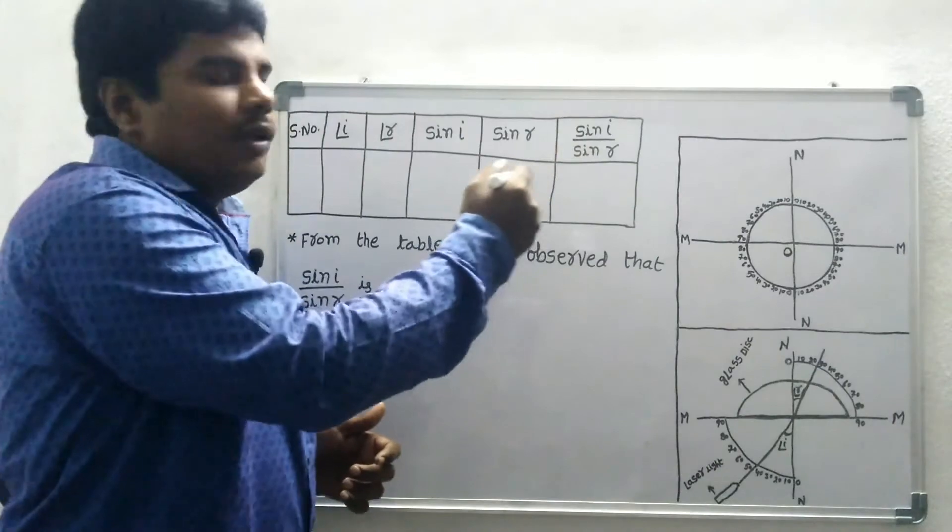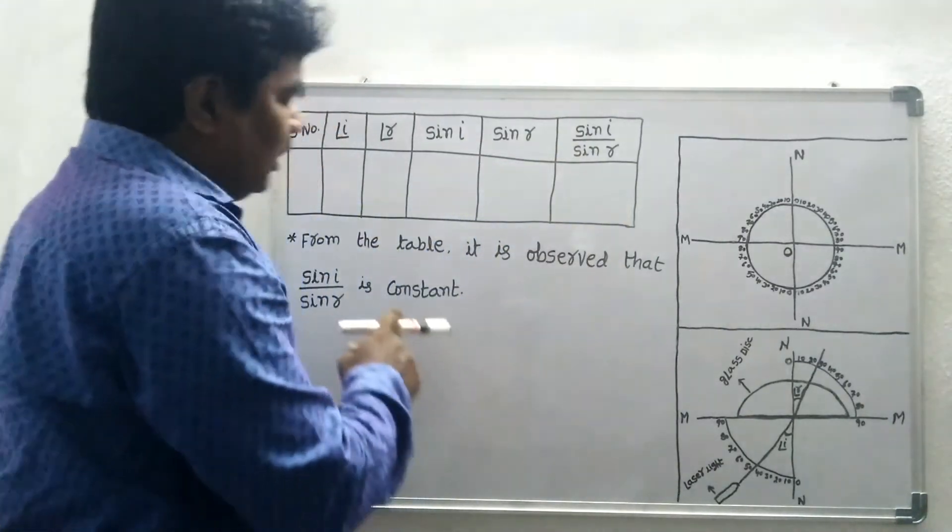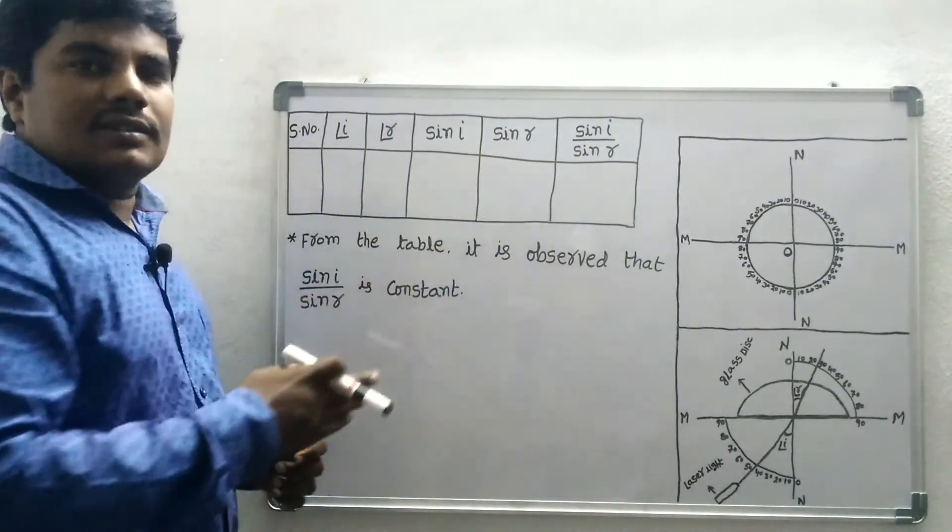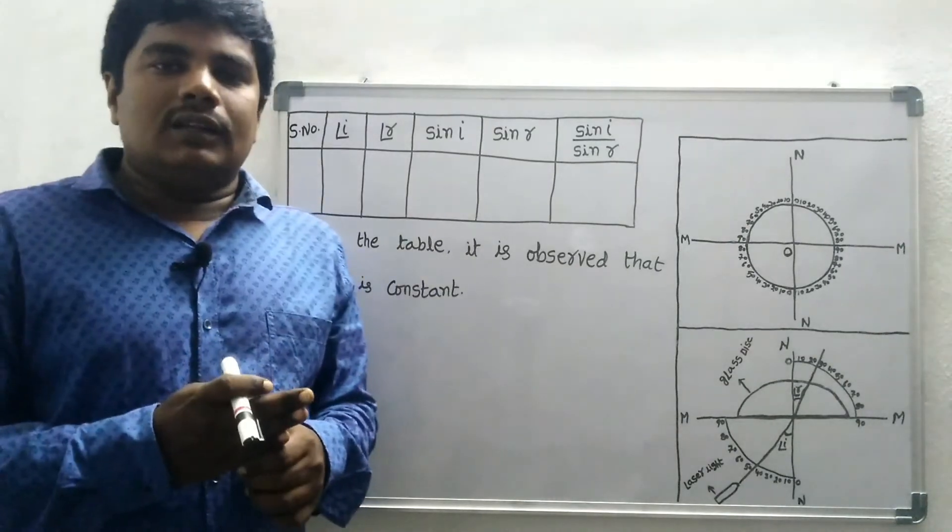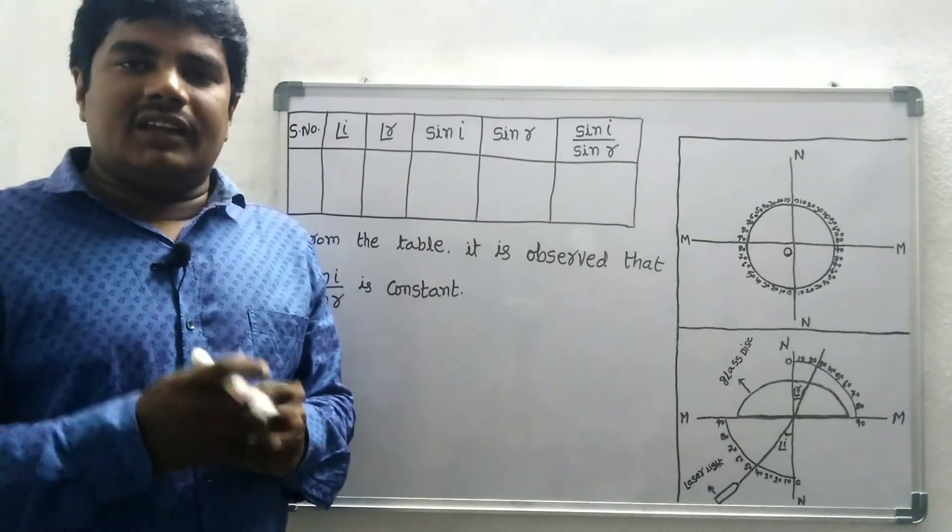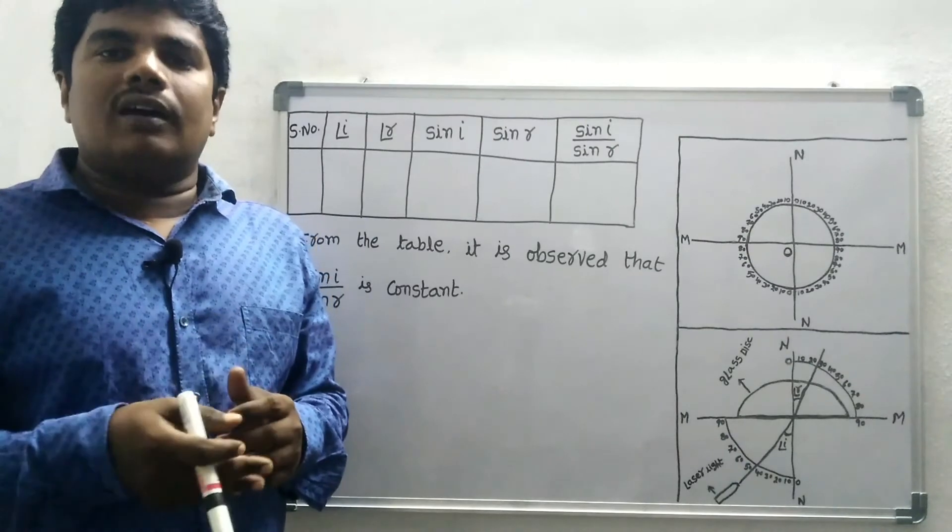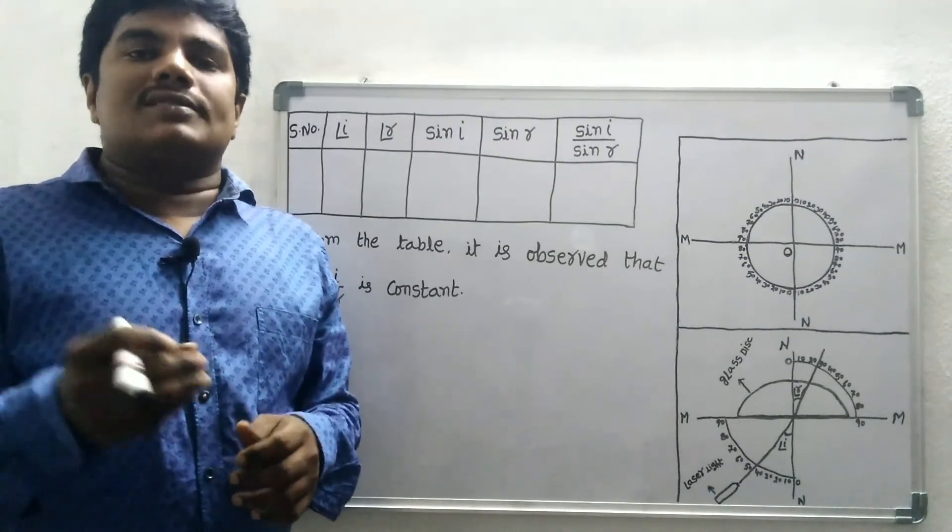From this table, we observe that sin i by sin r is constant. Like that, we experimentally verify Snell's law, or that sin i by sin r is constant.